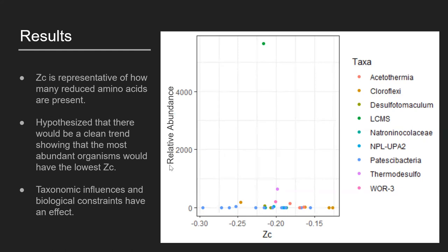We were hoping to see a clean trend where organisms with the lowest Zc scores would be the most abundant. However, the only taxa clearly demonstrating this is the point at the very top here, the LC-MS taxa. It is supporting the idea that organisms with the lowest Zc score would be relatively abundant.